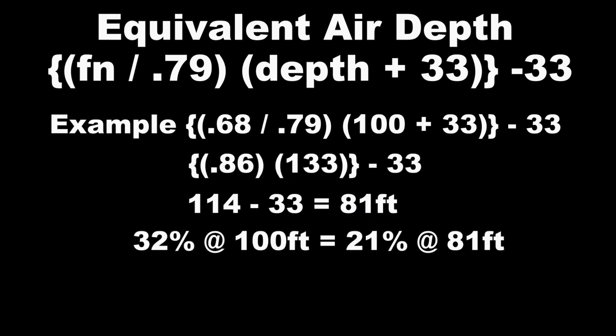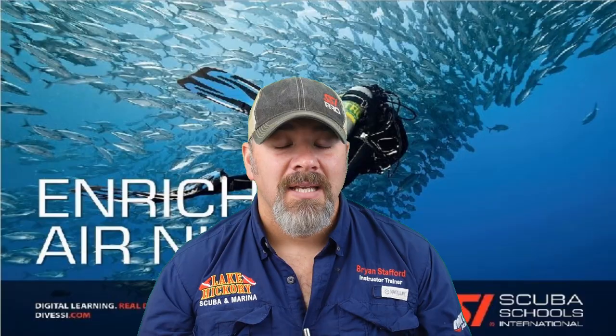For example, diving 32% nitrox at 100 feet: the fraction of nitrogen is 0.68, divided by 0.79, then multiplied by (100 + 33 = 133), giving 0.86 times 133 = 114, minus 33 = 81 feet. So diving 32% nitrox at 100 feet is the equivalent of diving air at 81 feet.